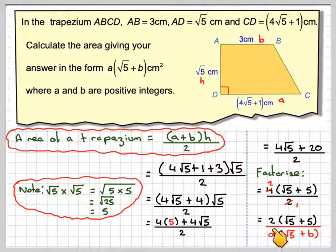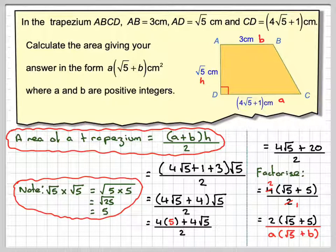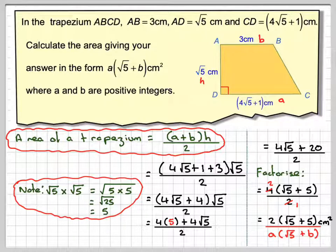Therefore the final answer is 2 brackets root 5 plus 5 centimetres squared. This has been a video to show you how to use surds and to calculate the area of a trapezium. I hope you've understood, and thank you very much for watching.